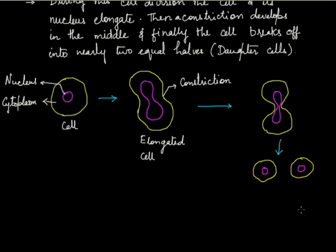There can also be instances when these two daughter cells can be unequal also, because there is no precise mechanism for this type of cell division. It is just that the cell elongates and breaks off into two parts. It is more similar to binary division. So this is the diagram representing amitosis.